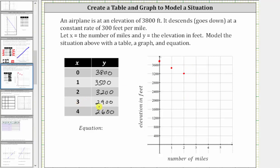The next ordered pair is three comma 2,900. Right three, up 2,900. And then we have four comma 2,600. From the origin, right four, up 2,600.